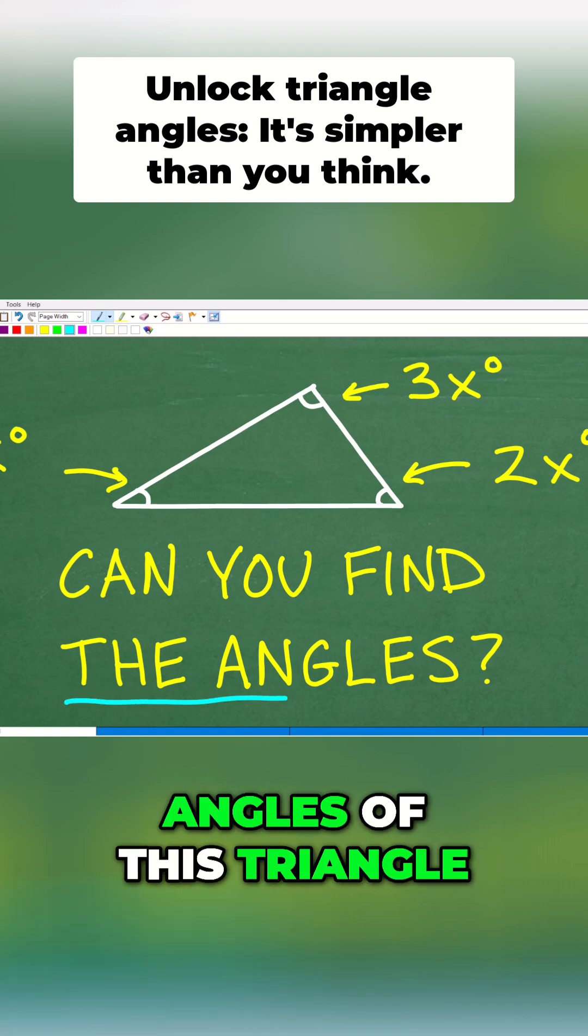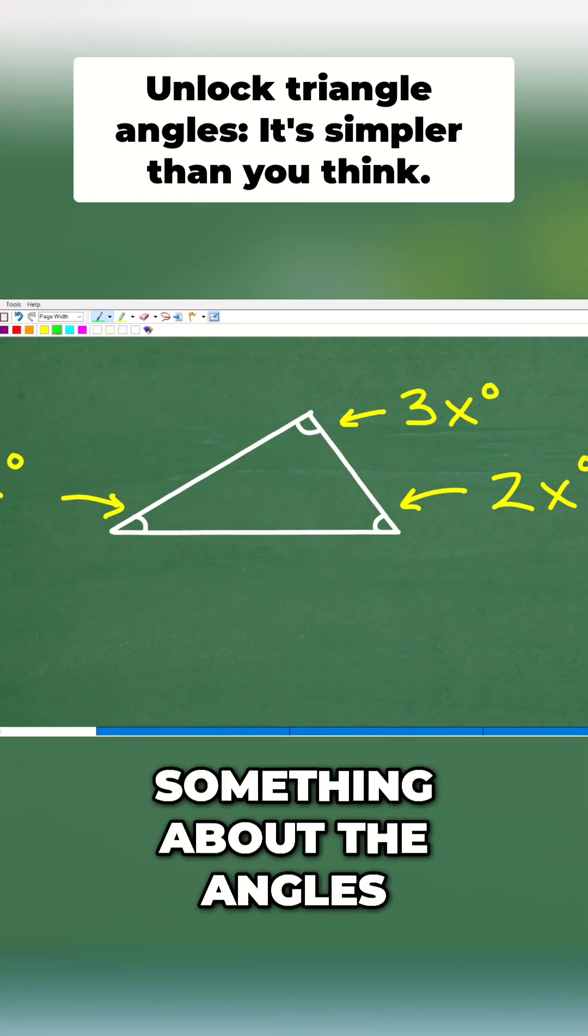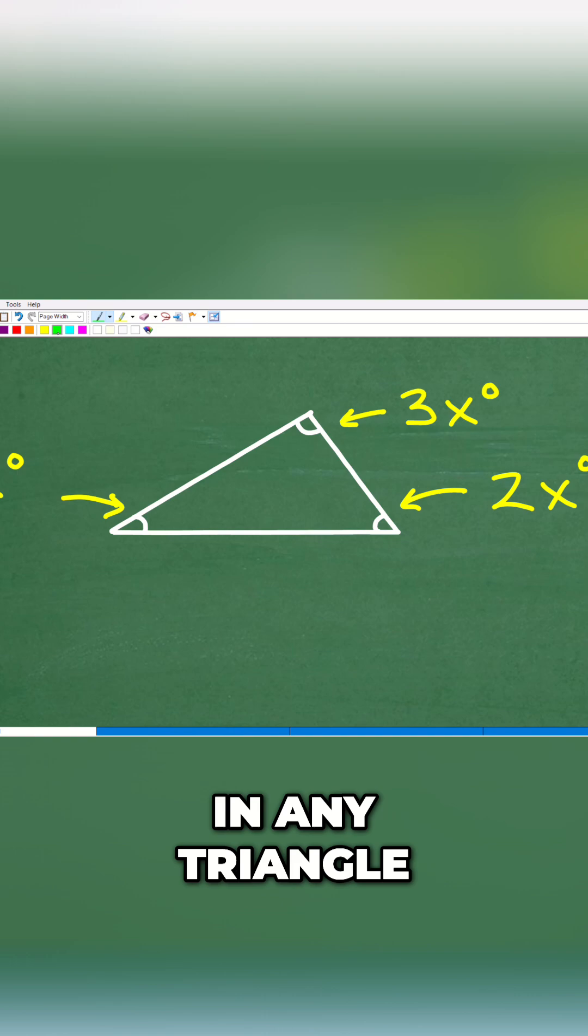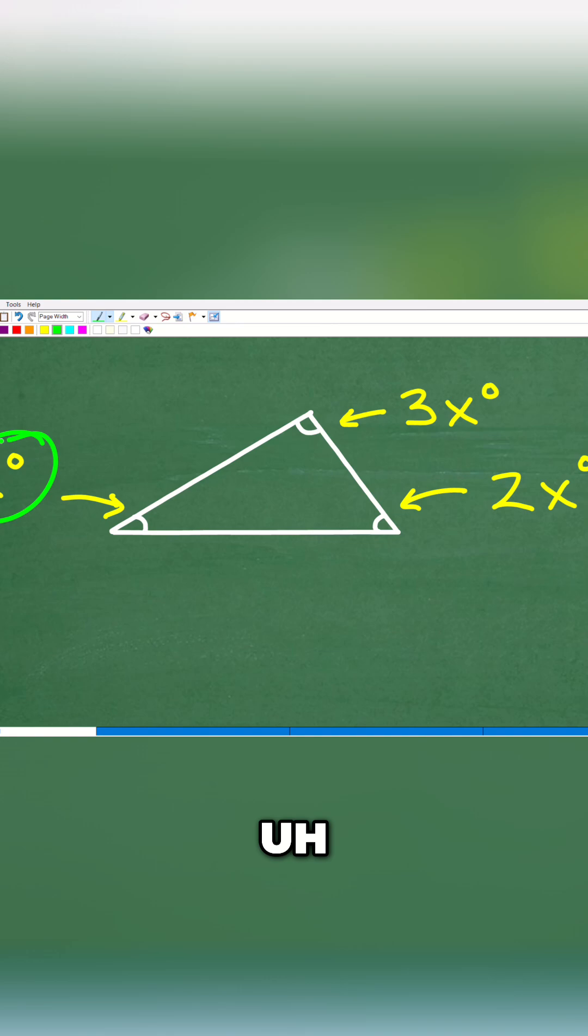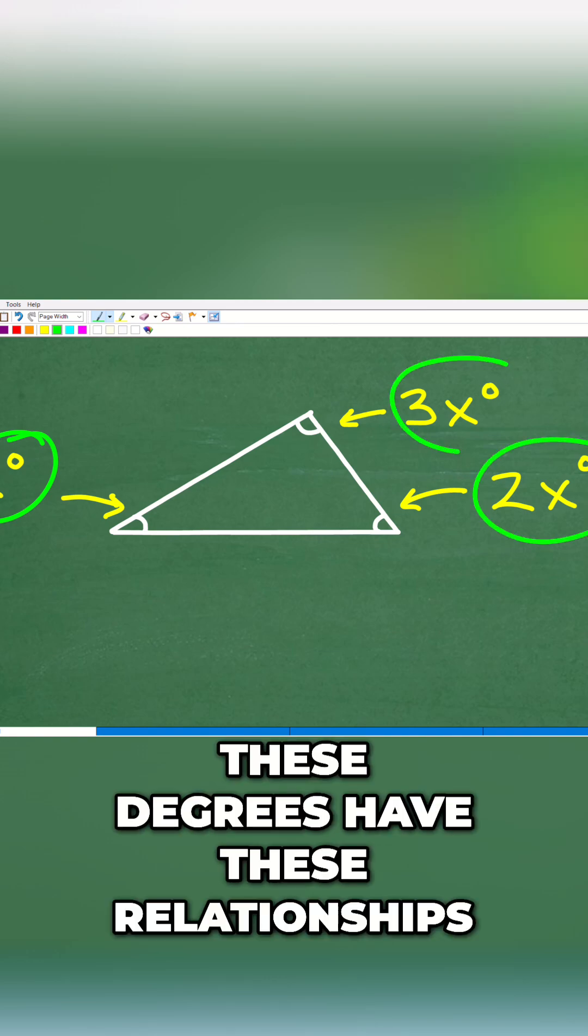We want to find the angles of this triangle. We need to know something about the angles in any triangle, and here we have no information other than this is a triangle and of course these degrees have these relationships.